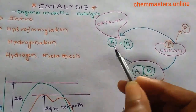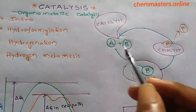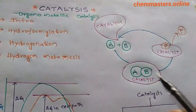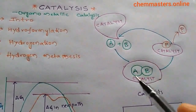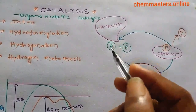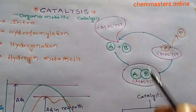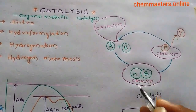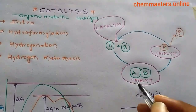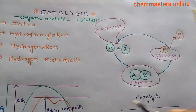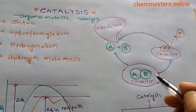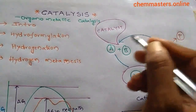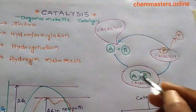Looking at this diagram: if A and B are reactants, without a catalyst they react to produce a product, but the rate may be slow. If you add a catalyst, it forms an unstable intermediate with the reactants. This intermediate is unstable so it readily gives the product, and then the catalyst is released and re-enters the cycle to continue the reaction.